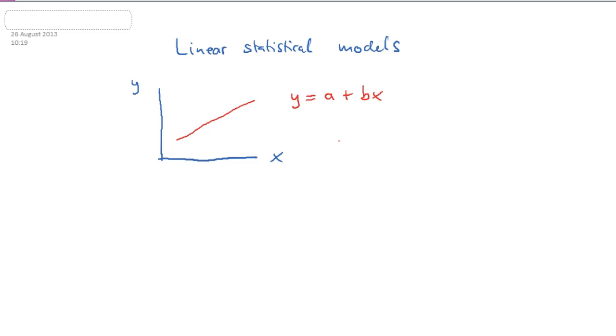Now what are these parameters in this model? A and b. These are the parameters. And a is the value of y that the model assumes when x equals zero. So if x equals zero, then we have y equals a plus b times zero. So y equals a. So if this is zero here on the graph,